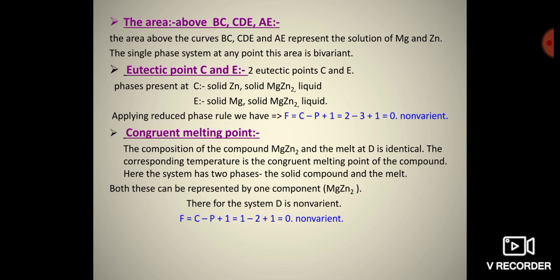There are three areas: above BC, above CDE, and above AE. The areas above curves BC, CDE, and AE represent the solution of magnesium and zinc. The single-phase system at any point in this area is bivariant.